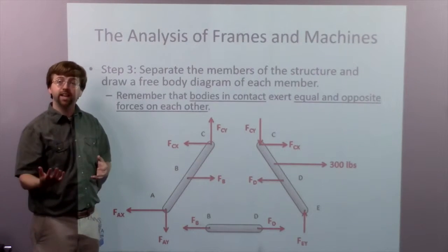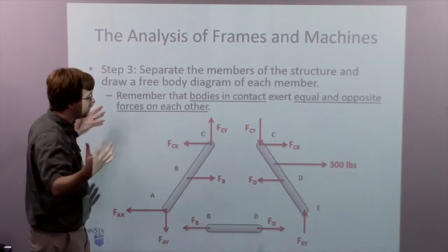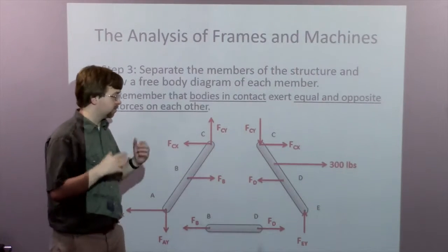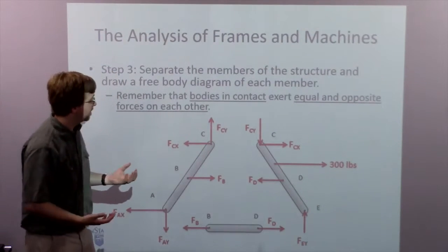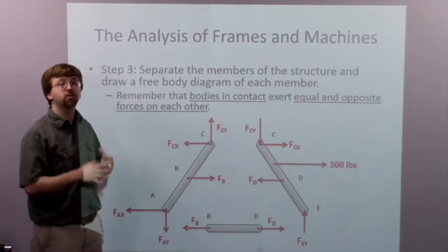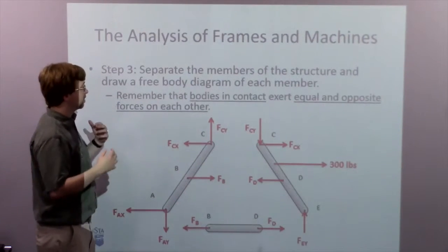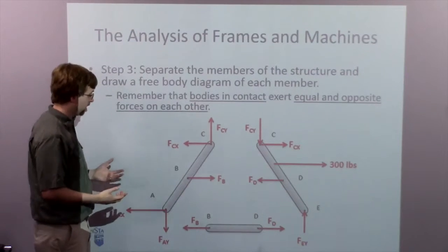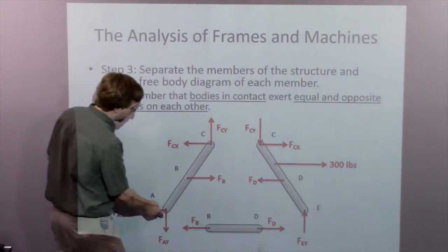So after that, step three, we're going to separate our structure into different pieces. So for my A-frame, I had three different members, and I draw each one independently. I'm going to draw a free-body diagram of each one. So this is member ABC.